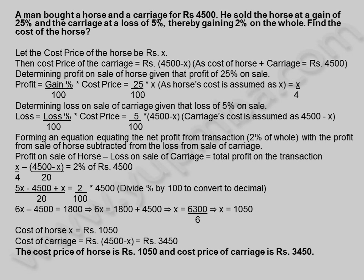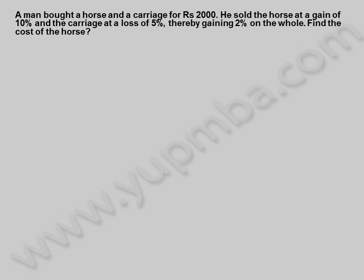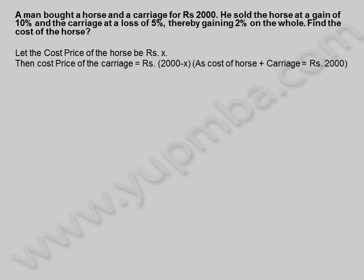Let us see another example. A man bought a horse and a carriage for Rs. 2,000. He sold the horse at a gain of 10% and the carriage at a loss of 5%, thereby gaining 2% on the whole. Find the cost of the horse. Let the cost price of the horse be X rupees. Then cost price of the carriage is equal to 2,000 minus X rupees, as cost of horse plus carriage equals 2,000 rupees.